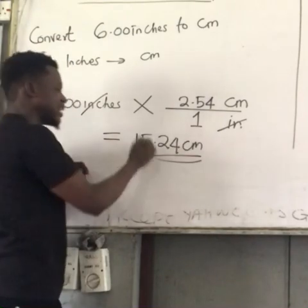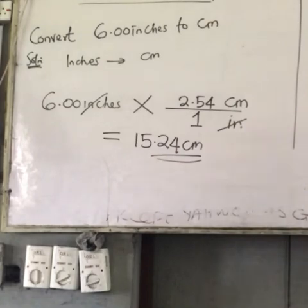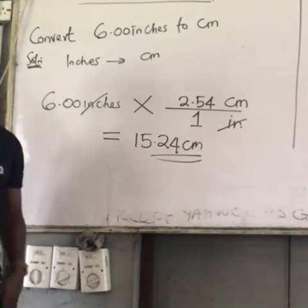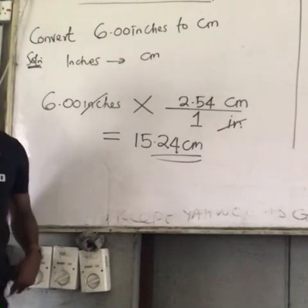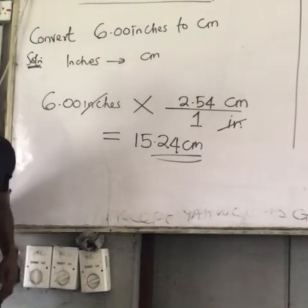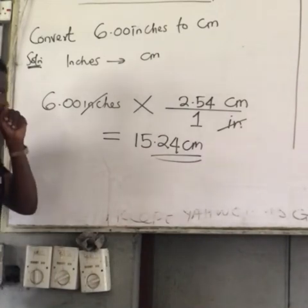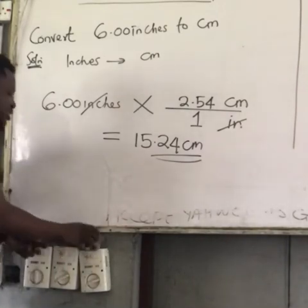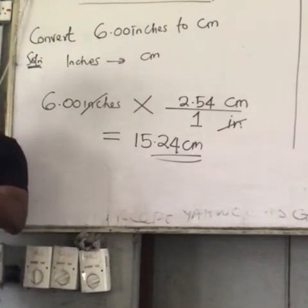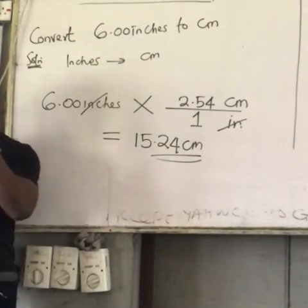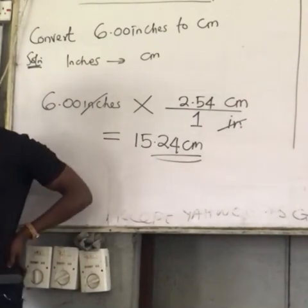So between the manipulative method and the conversion factor method, which do you prefer? Most prefer this one. Whichever you prefer is fine, but very soon we'll abandon the first one. Now, what if you're asked to carry out a conversion where the given conversion factor is not a direct conversion?